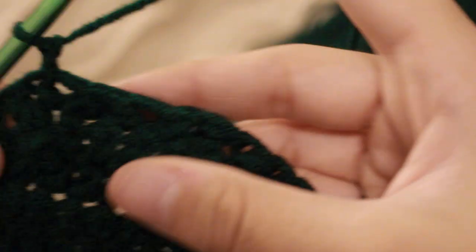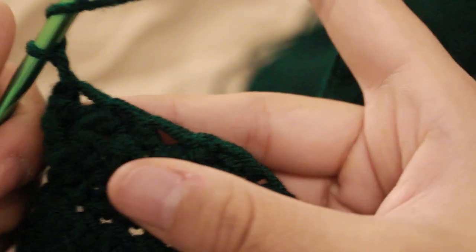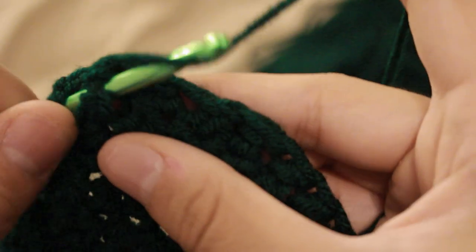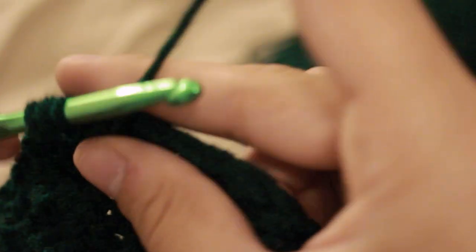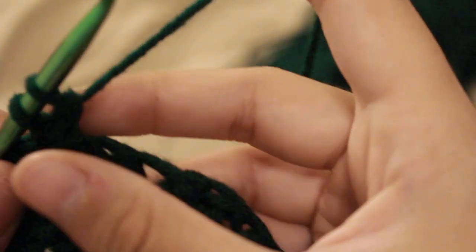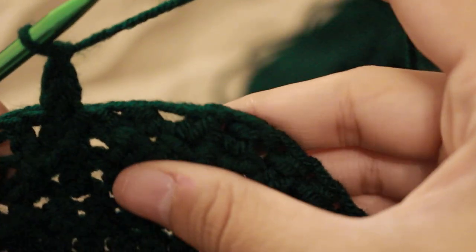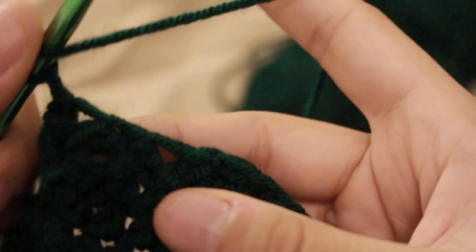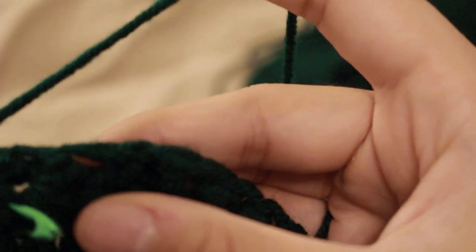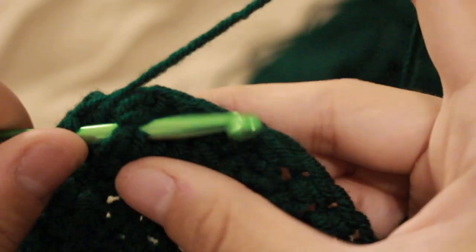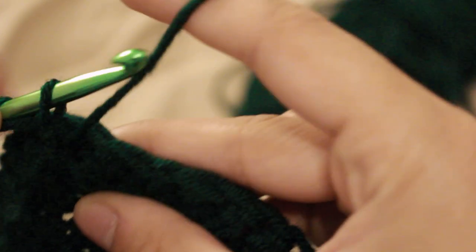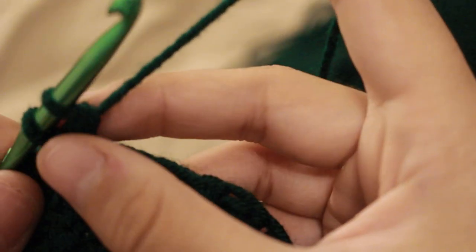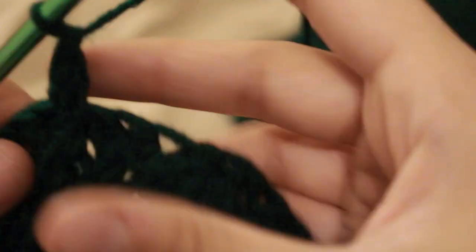Instead of yarning over and inserting your hook into the stitch space, you're going to go slightly below that to where there's kind of this post that's where your double crochet is from the previous round. This is really hard to describe. For the first one, I'm doing a front post double crochet. This means I'm going to yarn over and I'm going to stick my hook behind the post. This means that the post will be on the upper part or it'll be covering part of my hook and that's when I will yarn over essentially and pull up a loop.